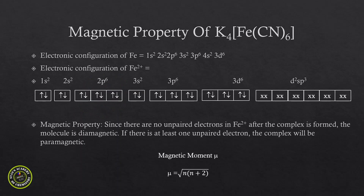Now let's predict the magnetic property of K4Fe(CN)6. Looking at the electronic configuration of Fe²⁺ when the complex has formed, because CN⁻ is a strong field ligand, it has paired up all the electrons and there are no unpaired electrons present in Fe. Therefore, the molecule will not exhibit any magnetic behavior, and using the equation μ = √(n(n+2)), where n is the number of unpaired electrons, you get a value of 0. So we can safely say this molecule is not paramagnetic.